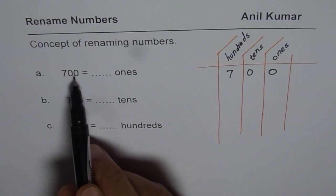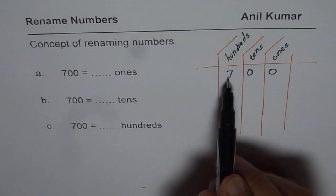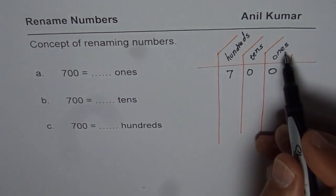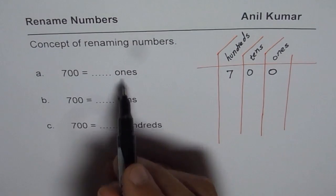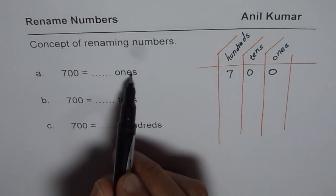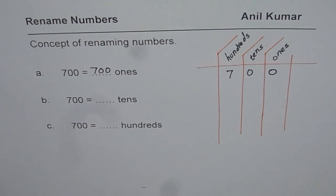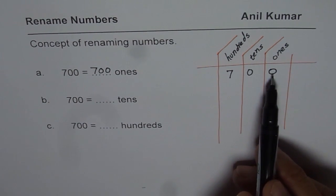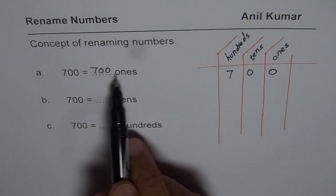When we say 700, it really means 700 ones. Since it ends at ones, we call it 700 — there is no need to say ones, it is understood. So 700 written like this really means ones, and when we write 700 as ones it is just 700. You can think about seven dollars and cents — pennies are your ones, so in seven dollars we have 700 pennies.